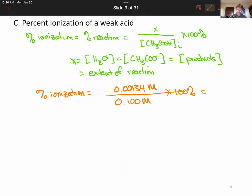So we're basically divide by 0.1 times 100, we're going to move the decimal places over, we get 1.34 percent ionization.